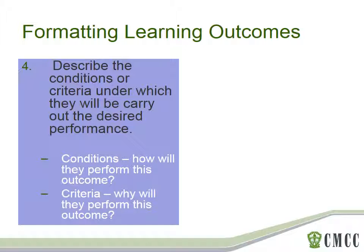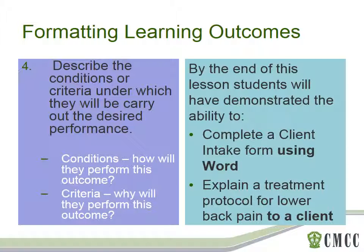The last step is to add in any conditions or criteria that will impact on the performance. So let's go back to our first example — using Word is a condition. If they can't collect and store the information digitally, then they haven't successfully demonstrated the learning outcome. There's a second learning outcome with a condition that would significantly impact on the performance: explaining a treatment protocol for lower back pain to a client. The use of jargon by a student during the assessment of this learning outcome would not demonstrate the desired performance.